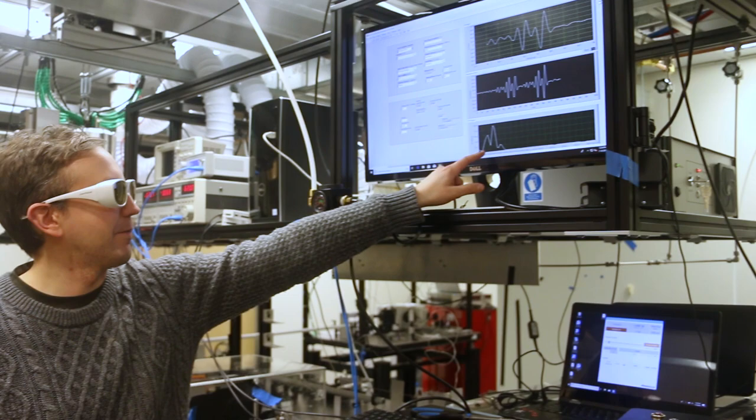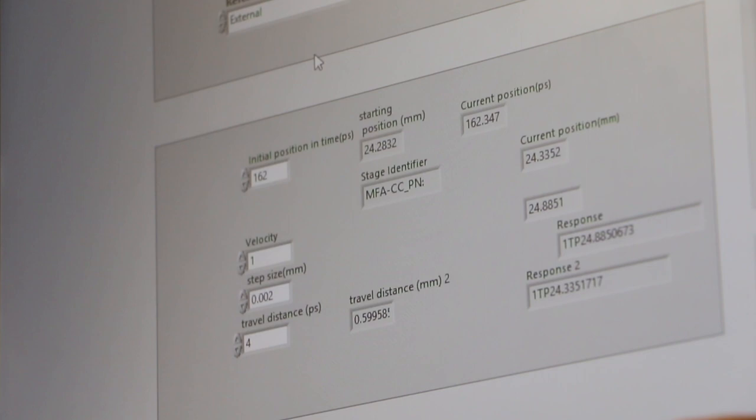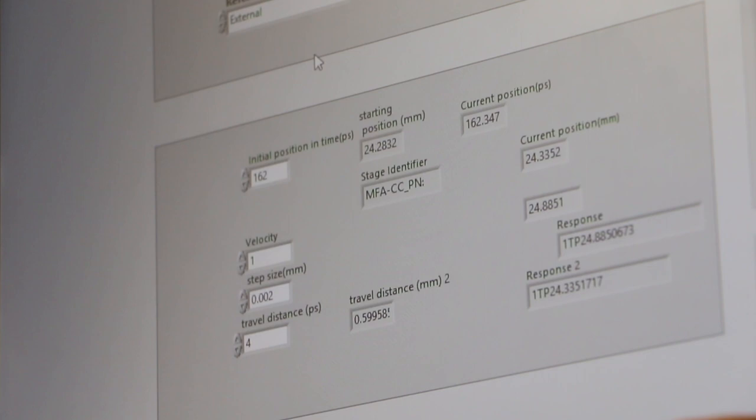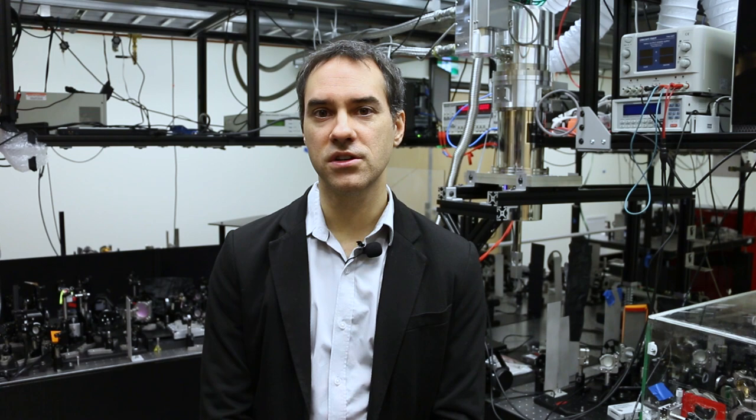We use a technique called electro-optic sampling to monitor directly the oscillating electric field of the terahertz pulse, and this allows us to extract key information about the materials when the terahertz pulse is going through these materials, much more than you would get if you're only looking at the power of the light.